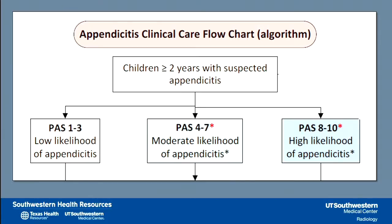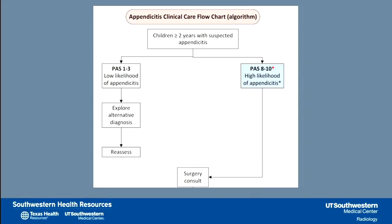Once you calculate the PAS, it breaks down into three groups. A score of 1–3 is low likelihood: explore other diagnoses, pursue those, and reassess. A score of 8–10 is high likelihood — many pediatric surgeons are comfortable diagnosing appendicitis clinically, and historically patients were taken to the OR based on history and physical alone. So the recommendation for scores of 8–10 is surgical consultation, as there's a high likelihood of appendicitis.